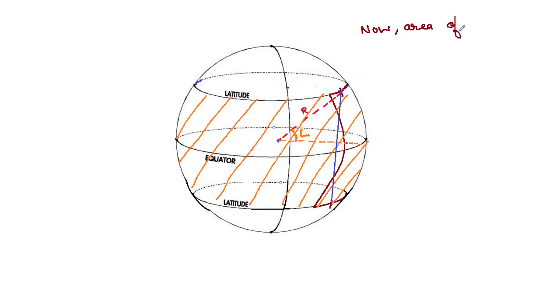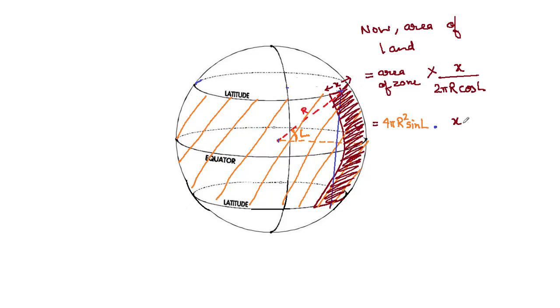Our land is not the whole slice but a part of it. So our land area is the overall area of the slice times x divided by the circumference of the latitude, or in other words 4π r² sine l times x divided by the circumference 2π r cos l, which basically gives 2r times x times tangent of l.